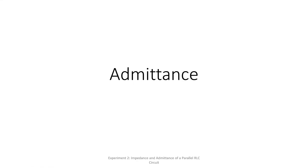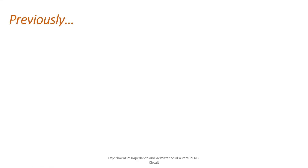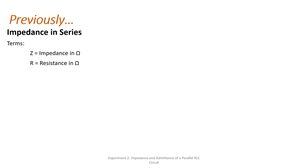Let's have admittance for today. So previously we had the first experiment, with impedance in series. Here are the terminologies: we have impedance Z, measured in ohms; resistance R, measured in ohms; and reactance, also measured in ohms, indicated by the letter X.